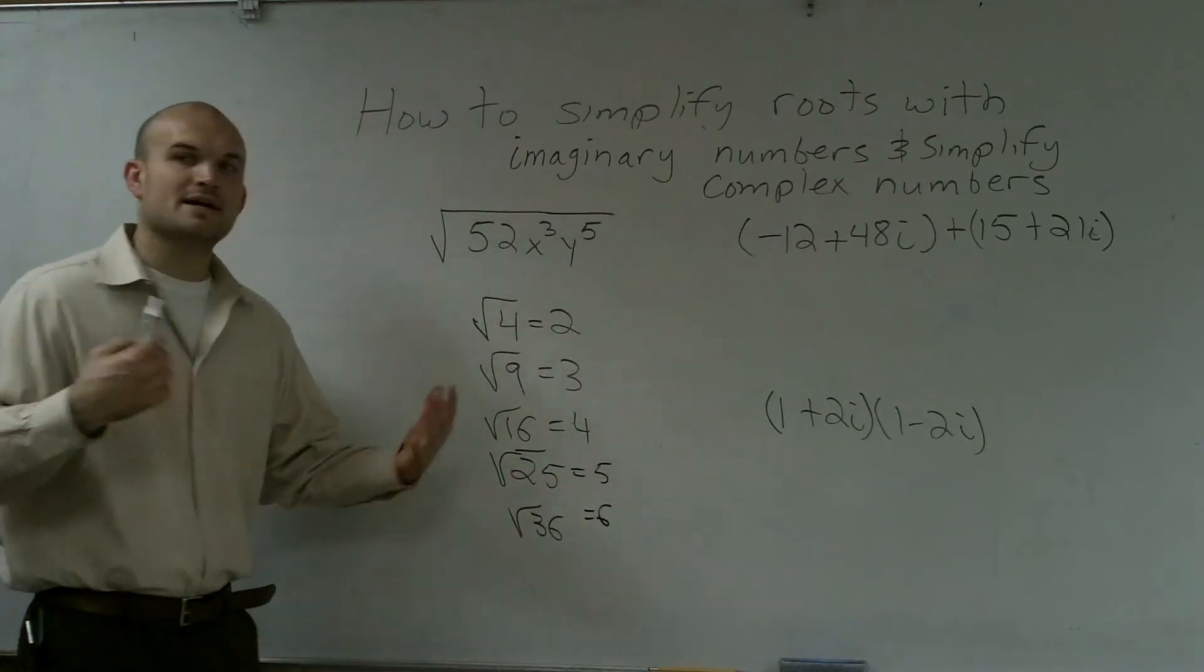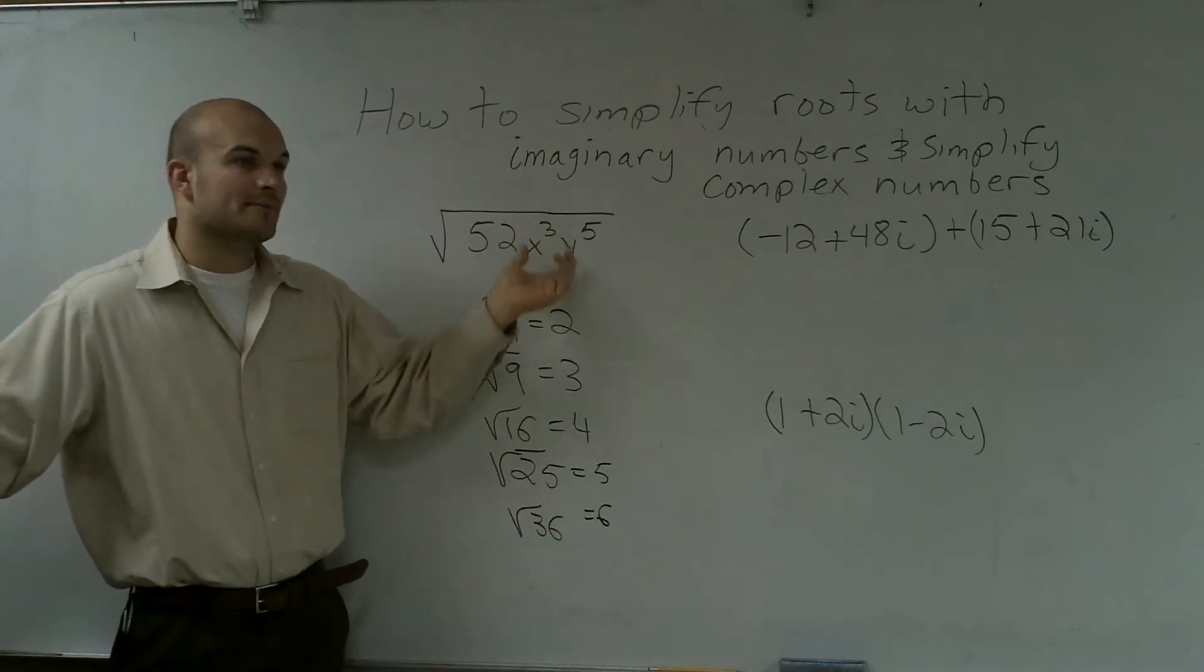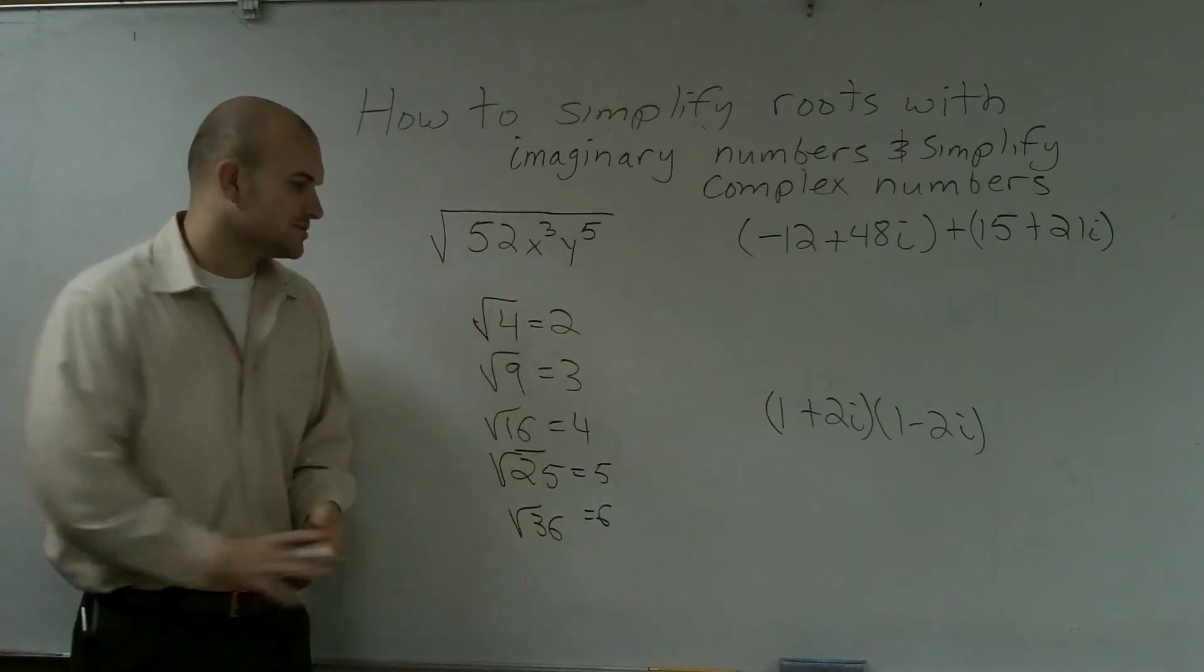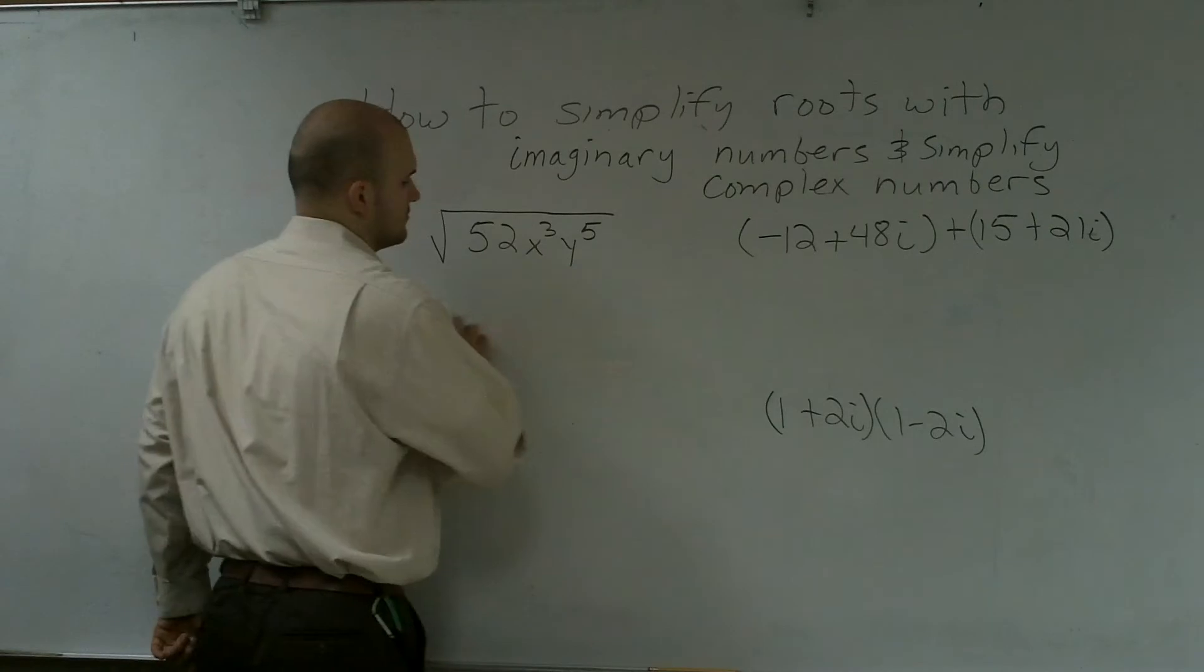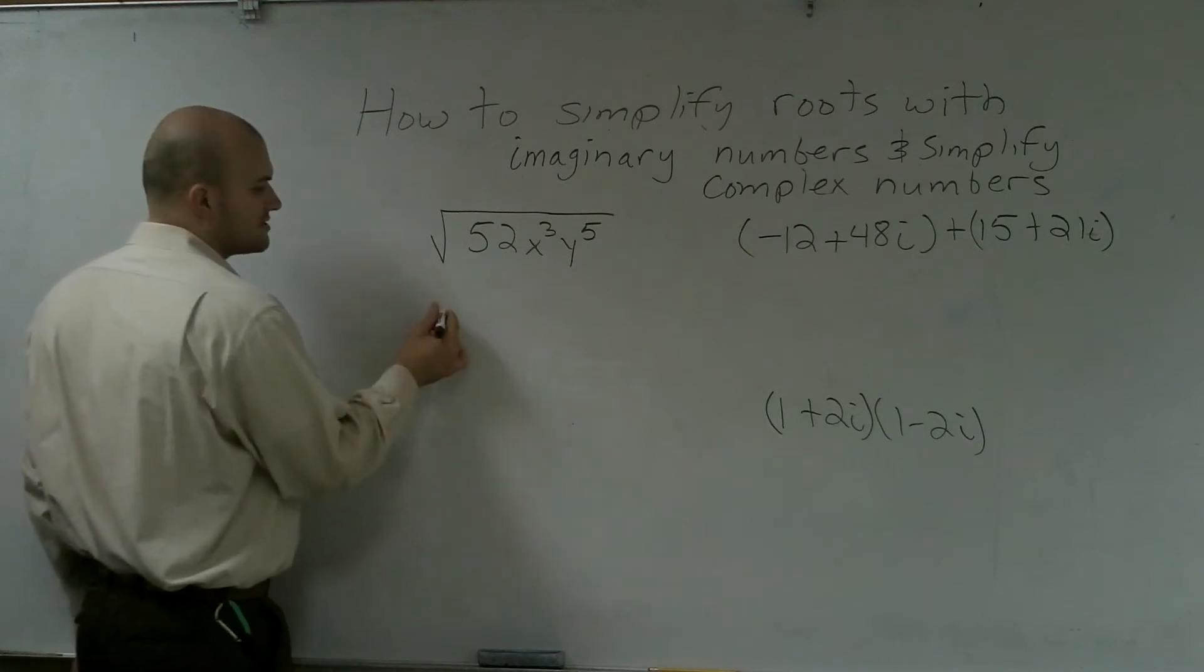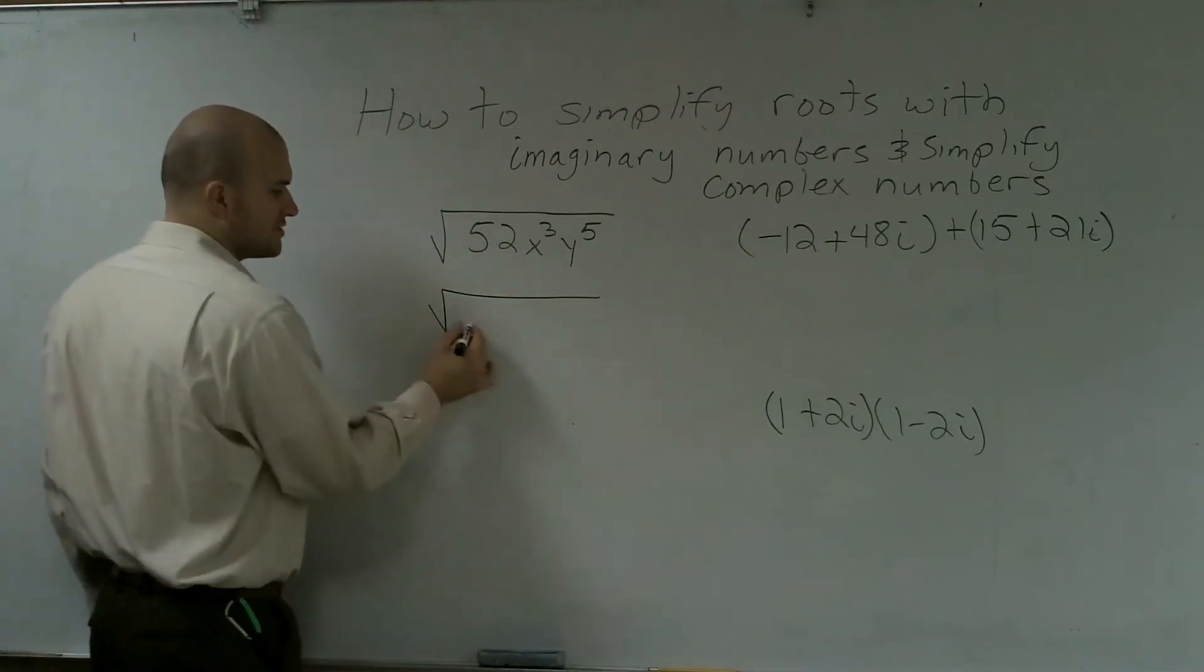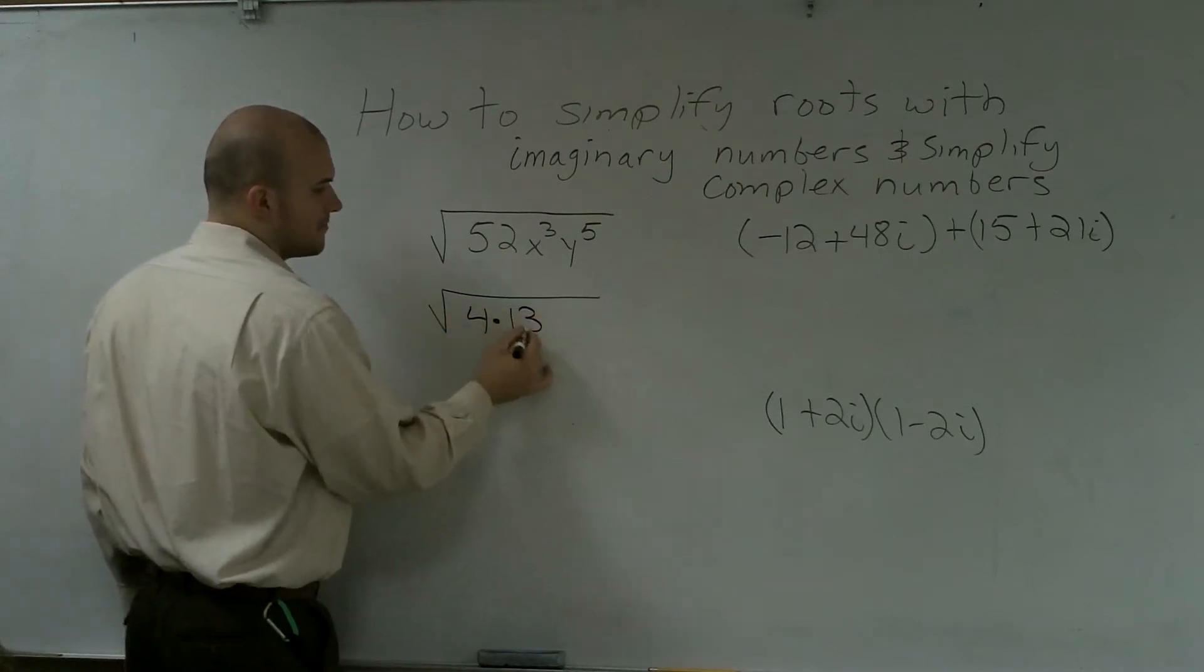So what my goal is when I'm trying to simplify a number or even variables with exponents, what I'm trying to do is I'm trying to get to square numbers. So what I need to do is I need to look at, is there any square number that goes into 52? And what I determine is, yes, there is. My square number that goes into 52 is going to be 4 times 13.